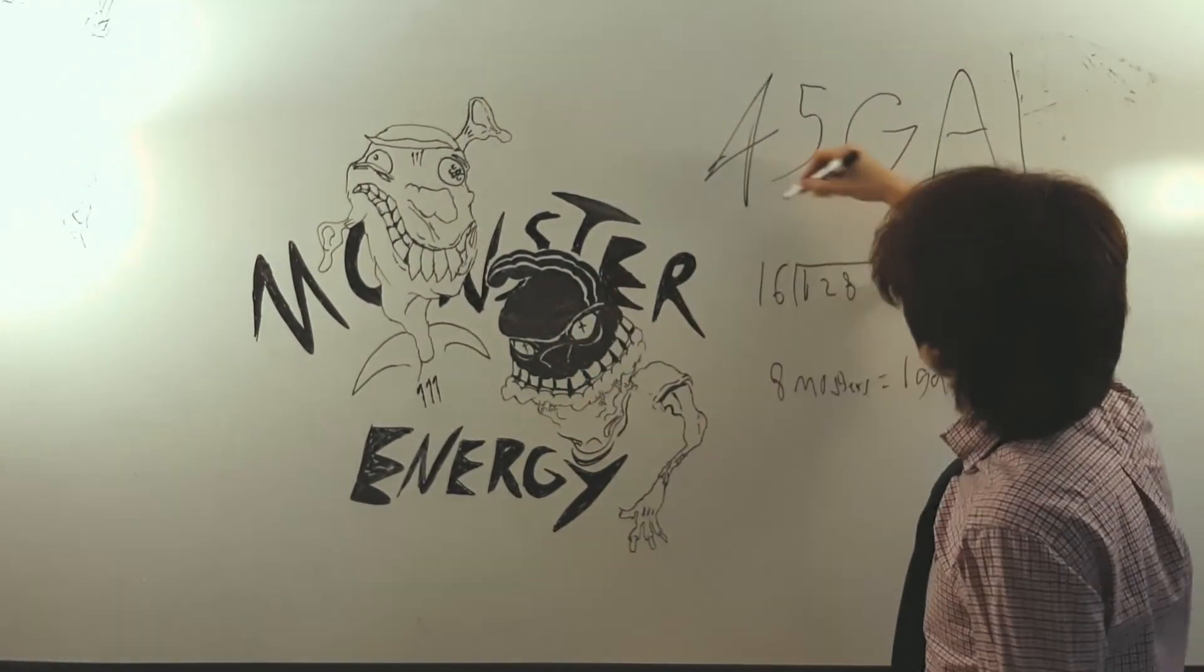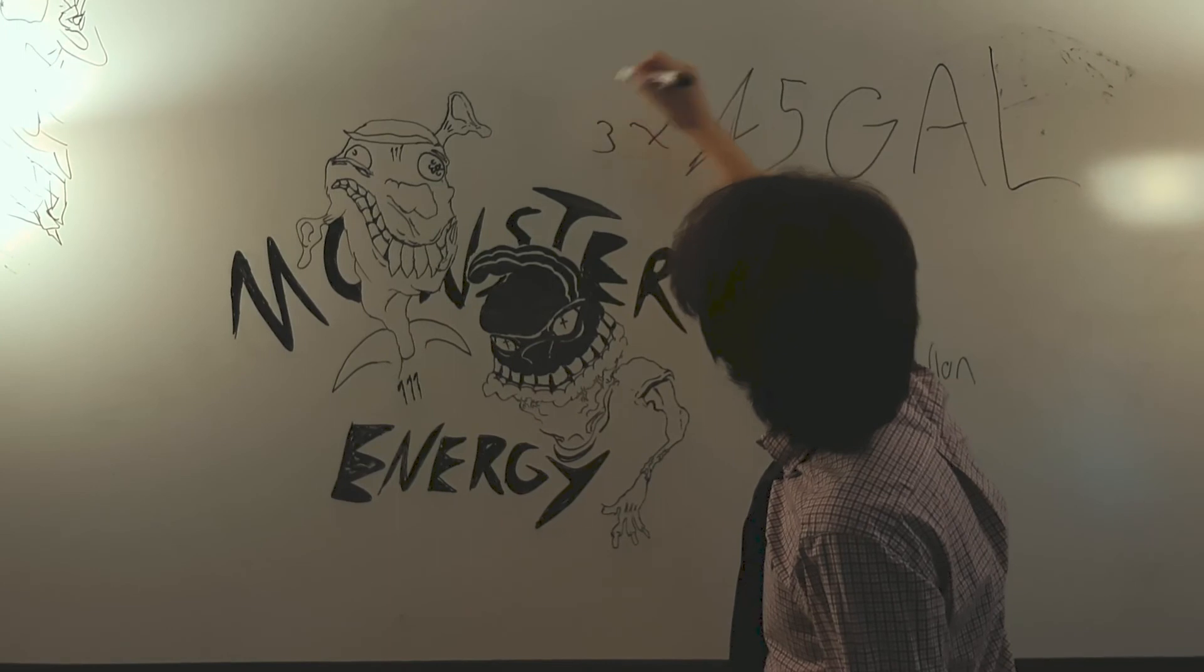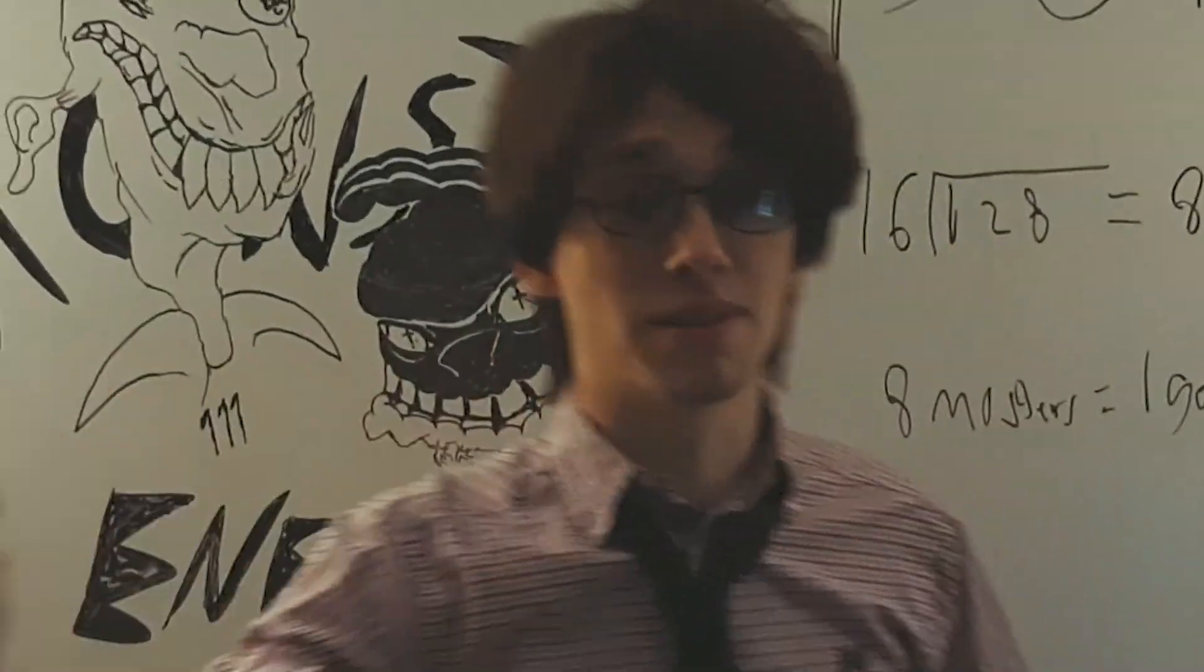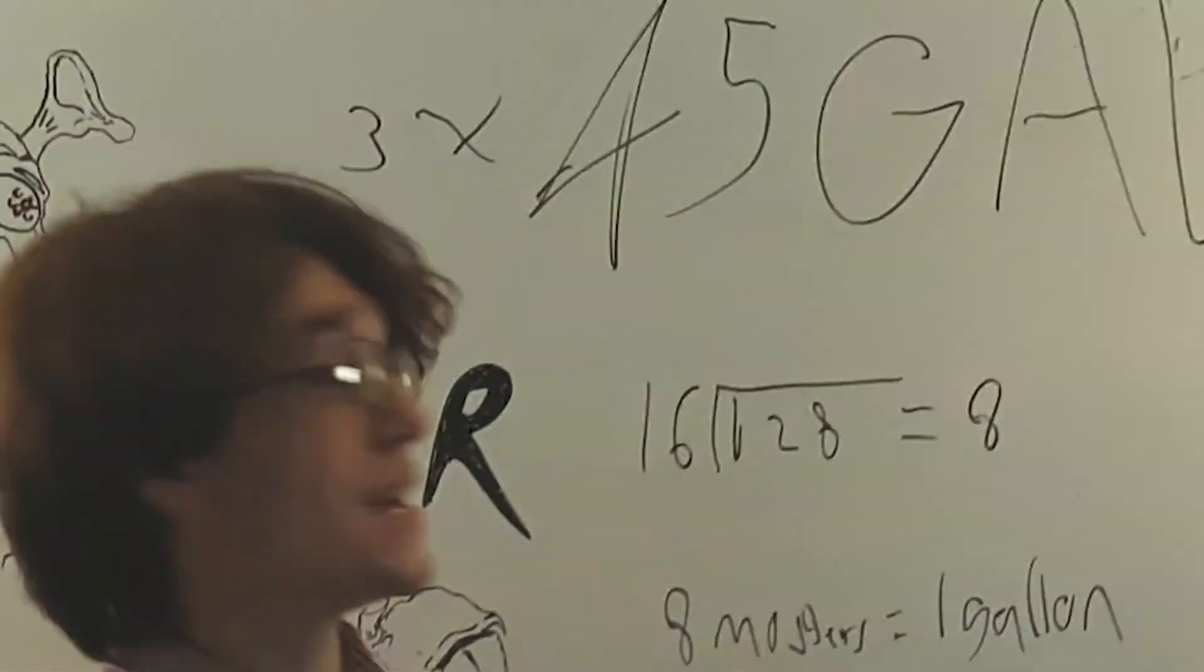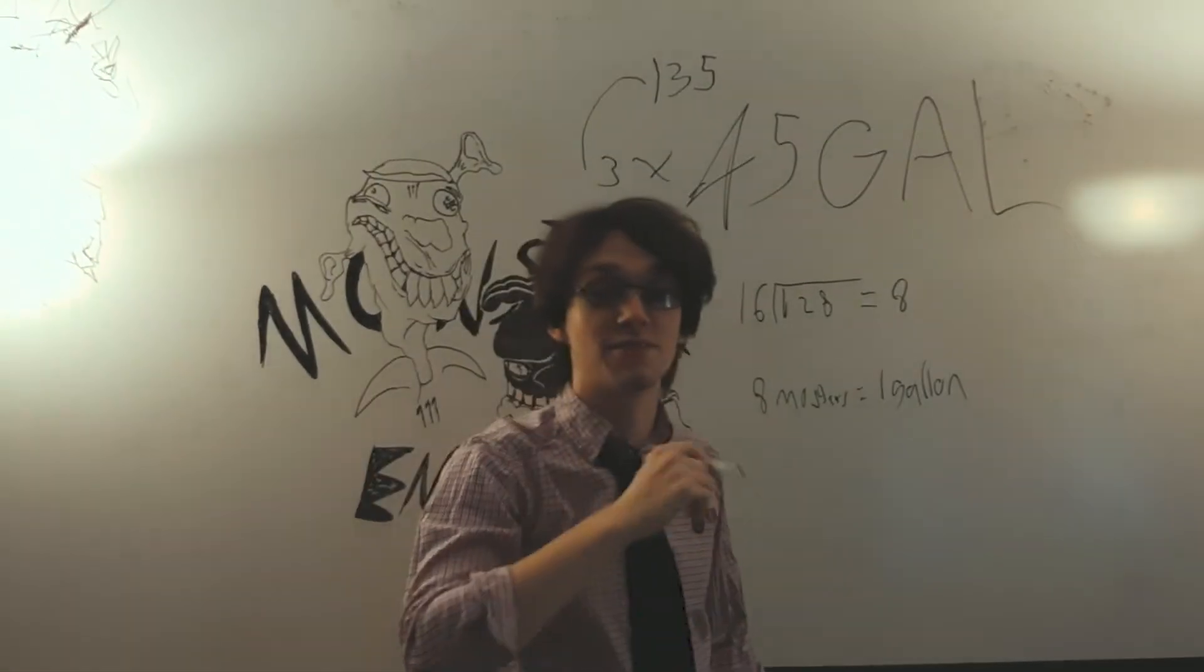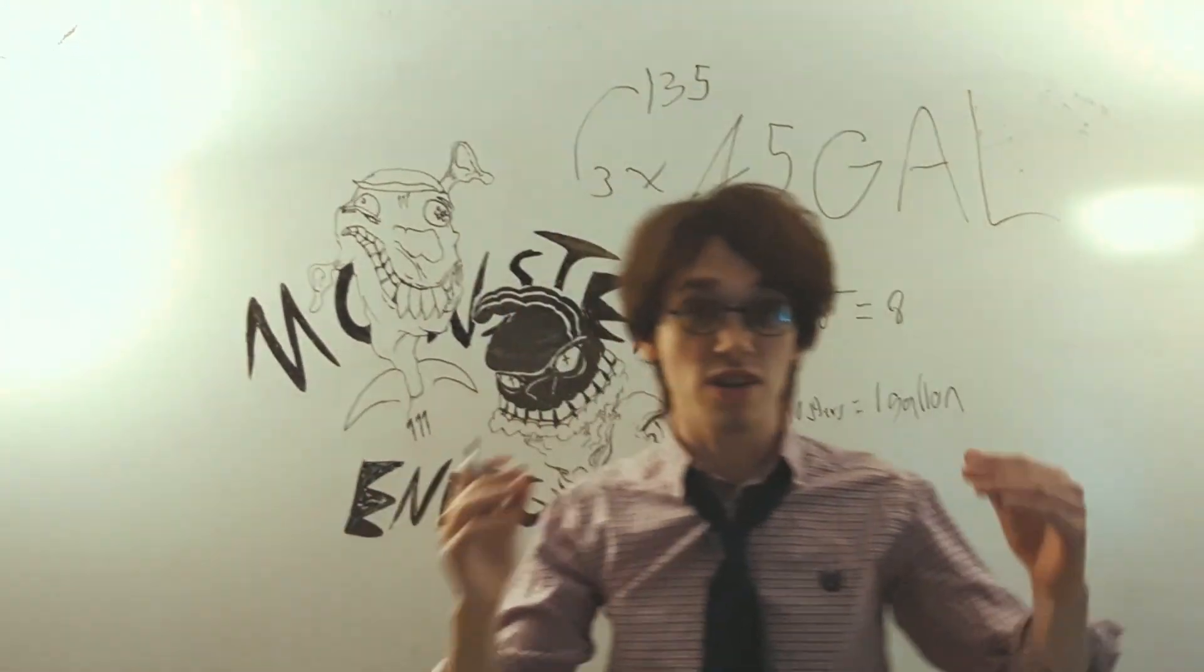So let's times that by three. I'm a smart man. I know what that is. 40 plus 40, 80 plus another 40, 120, baby. Now let's add the fives. What does that equal? That is 135. 135 gallons of monster I have consumed in the last three years.